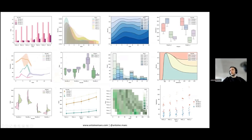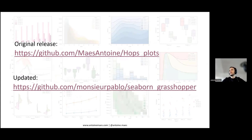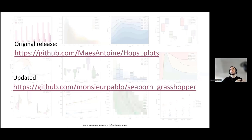These are some examples of the plots we can create — there are a lot more. The original release is posted on my GitHub. There's also been an updated version by Juan Pablo Arango with more tweaks on the aesthetics of the graphs, and it also allows the plugin to scale more, avoiding some limitations Hops has. So it's better for further development — go have a look if you're interested.